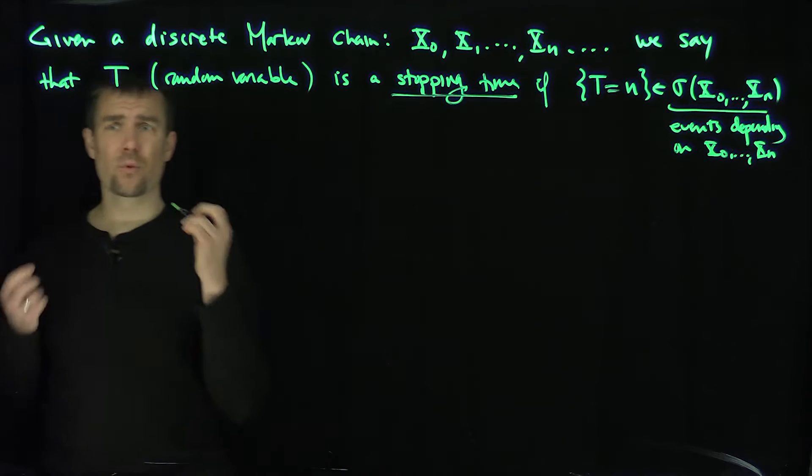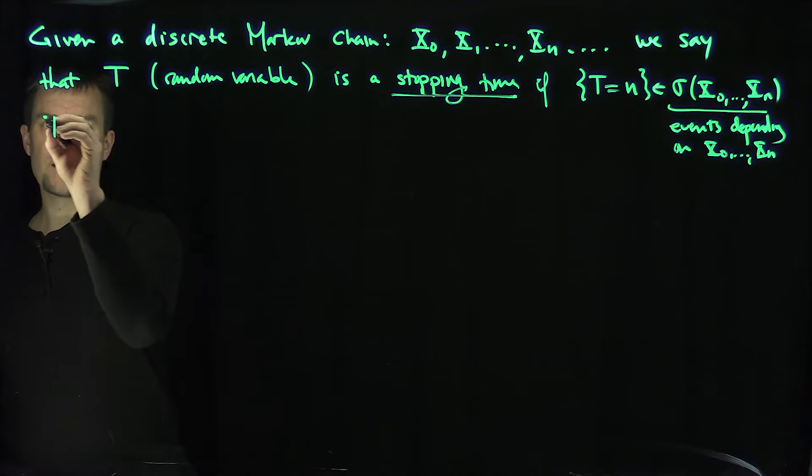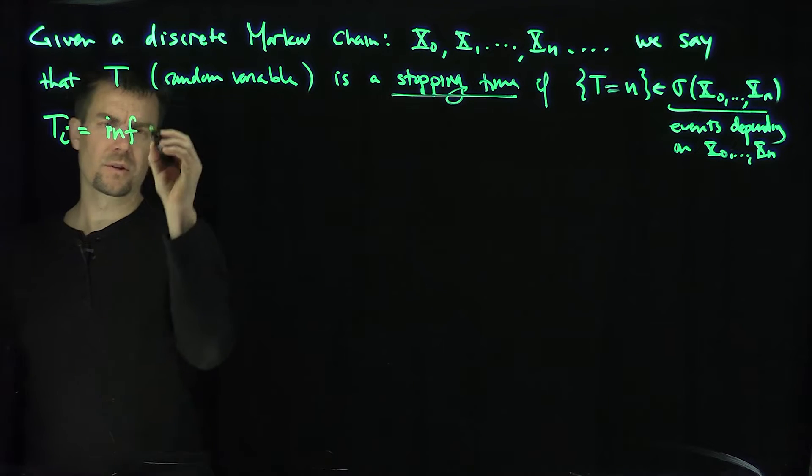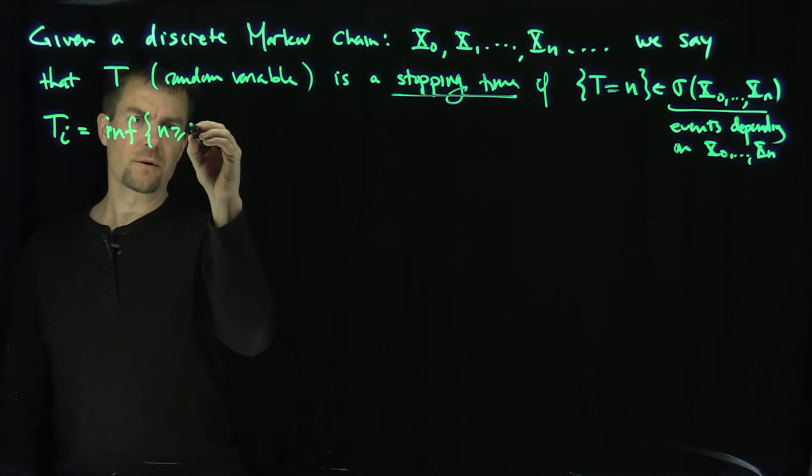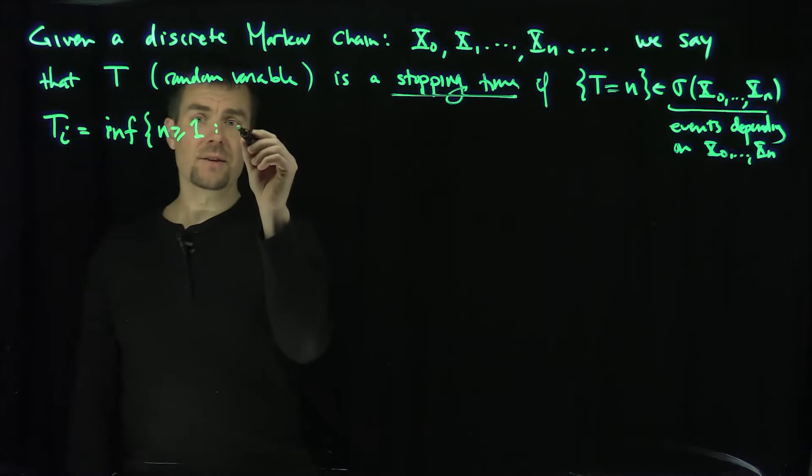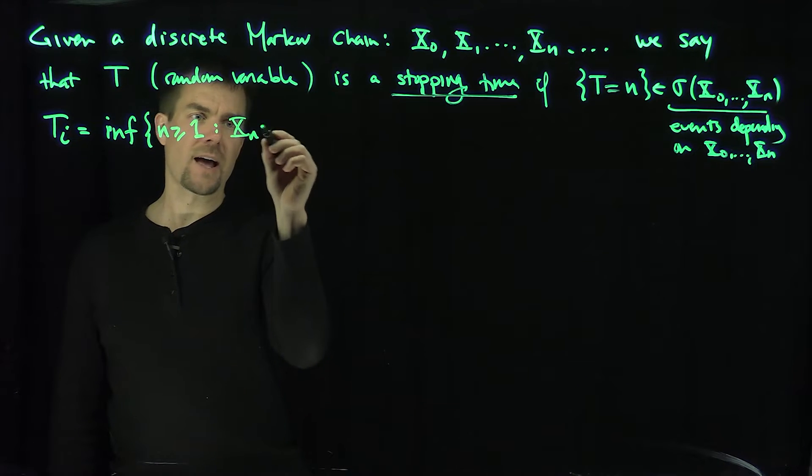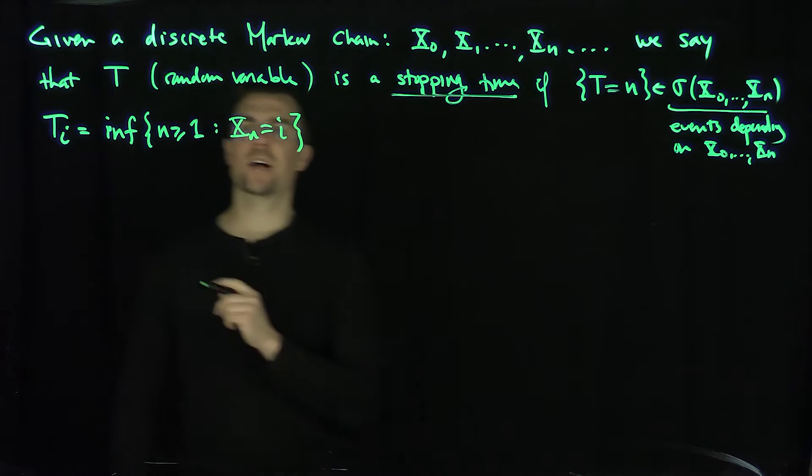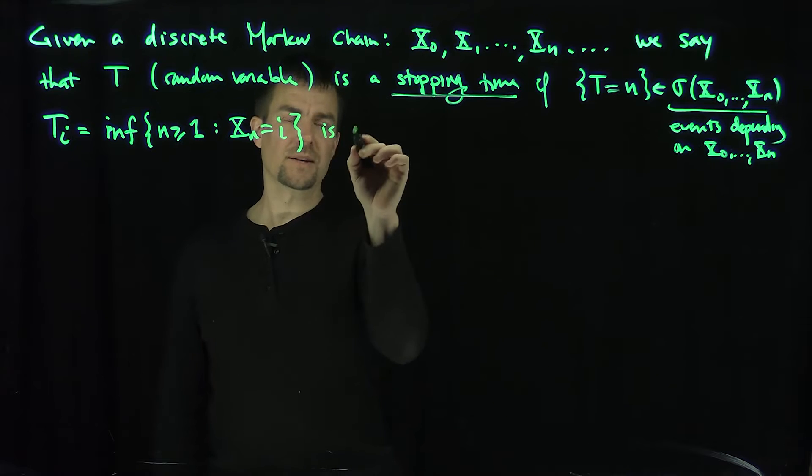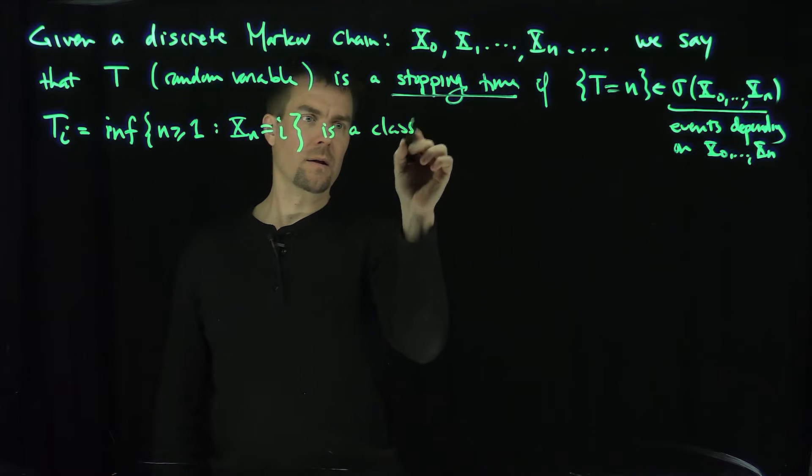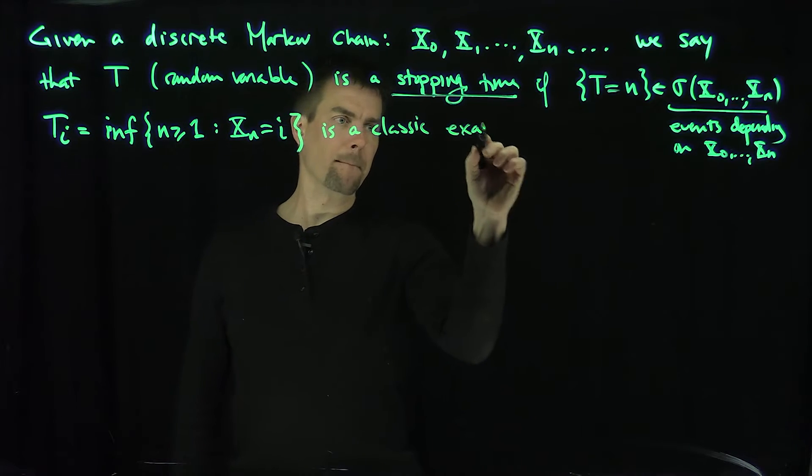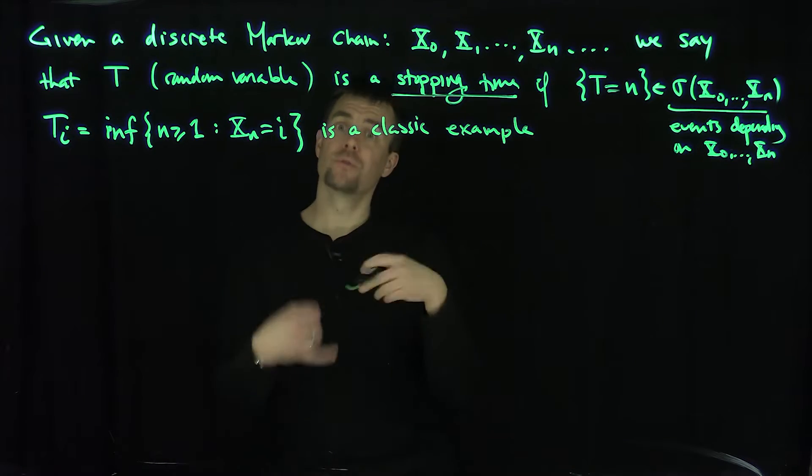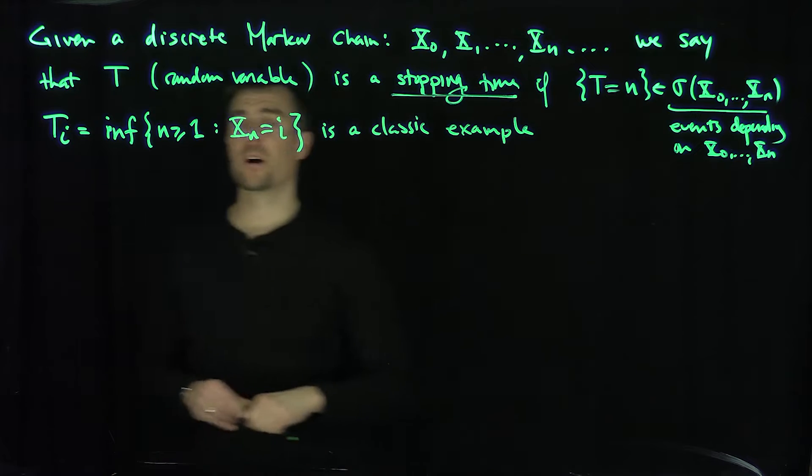So for example, one stopping time we're really going to be interested in is this stopping time over here. I'm going to study the T_xn, which is the infimum, or the smallest or the minimum, the smallest n greater than or equal to 1, such that xn is equal to i. The process enters the i-th state at that time, the smallest time for which the process enters that state. So this is a stopping time, is the classic example of a stopping time.